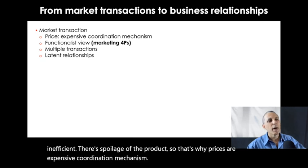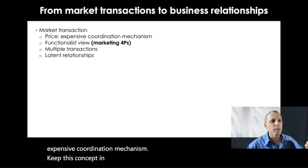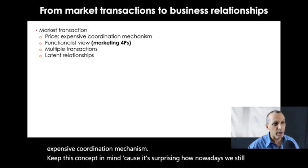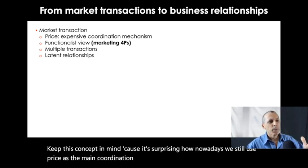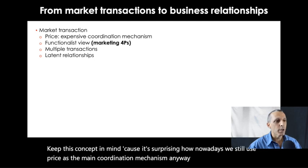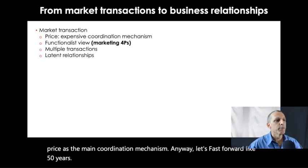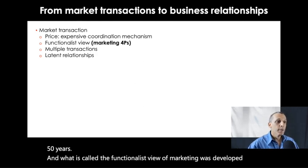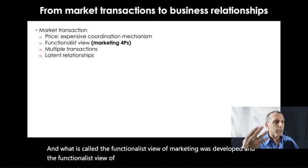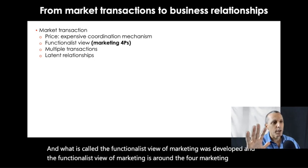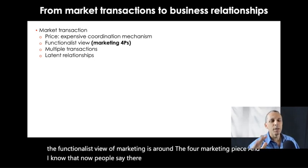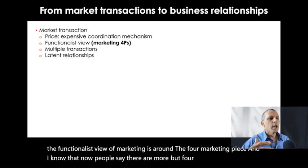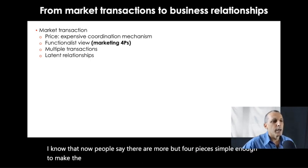Keep this concept in mind because it's surprising how nowadays we still use price as the main coordination mechanism. Let's fast forward about 50 years to what is called the functionalist view of marketing, which is built around the four marketing P's.